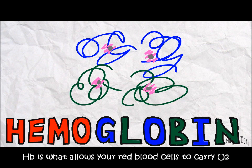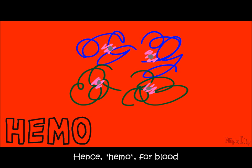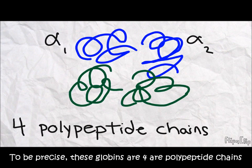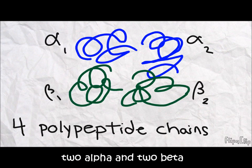Hemoglobin is what allows the red blood cells to carry oxygen. Hence, hemo for blood and globin because it's made of globular proteins. To be precise, these proteins are four polypeptide chains, 2 alpha and 2 beta.